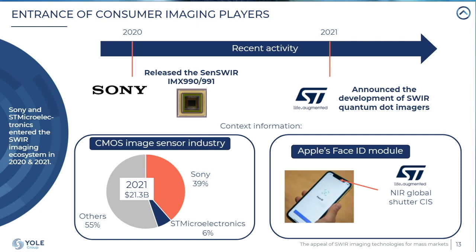In terms of activity: Sony entered in 2020 with a commercial InGaAs sensor released for industrial machine vision applications. In 2021, STMicroelectronics publicly announced it was working on the development of a SWIR quantum dot imager. These big names from the consumer industry are now involved in the SWIR industry, which is a significant signal.